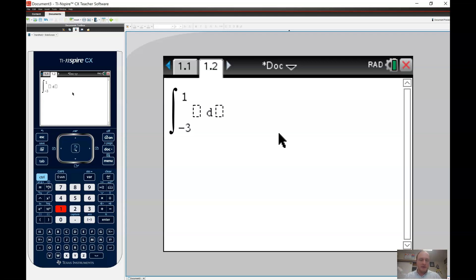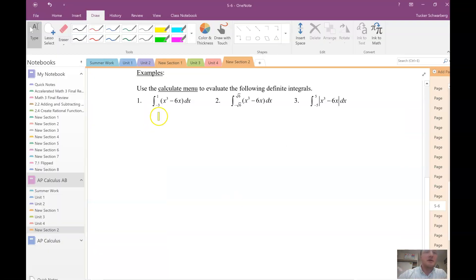So lower bound is on the bottom, right? The lower, and then the upper bound, the upper bound. And then I'll enter the function. So x cubed minus 6x, and I want to integrate with respect to x. So we get 4. Okay, so that's our answer. So in our notes, this is equal to 4. That's it.